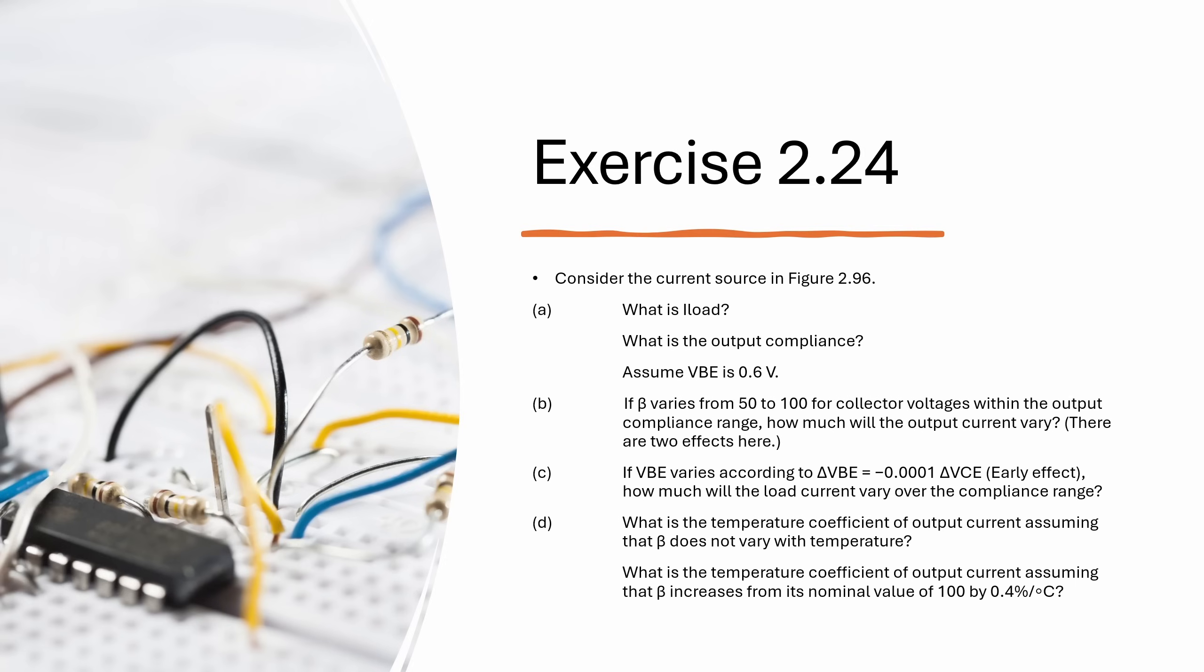The first question is what is I-load and what is the output compliance, assuming VBE is 0.6. Then part B, if the beta varies from 50 to 100 for collector voltages within the output compliance range, how much will the output current vary? There are two effects that we need to consider for this. Part C, if VBE varies according to the equation given on the screen, basically early effect, how much will the load current vary over the compliance range? And finally, what is the temperature coefficient of the output current, assuming that beta does not vary with temperature? And second part of part D is what is the temperature coefficient of output current, assuming that beta increases from its nominal value of 100 by 0.4% per degree C.